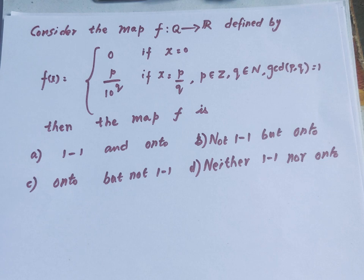Then the map f is: (A) 1-1 and onto, (B) not 1-1 but onto, (C) onto but not 1-1, or (D) neither 1-1 nor onto.